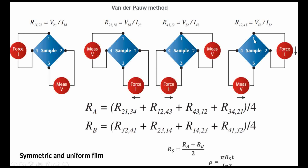R₁₂₄₃ is calculated, then the current direction is reversed to get R₂₁₃₄. Next, R₄₃₁₂ is measured, then reversed to get R₃₄₂₁. Similarly R₂₃₁₄ and related values are measured. From these, RA and RB are calculated, and their average gives the sheet resistance Rs.